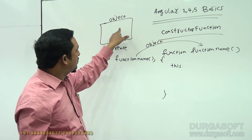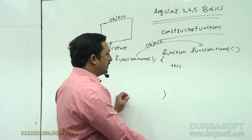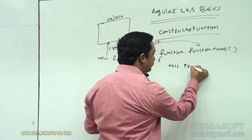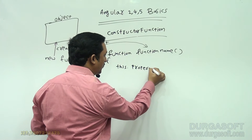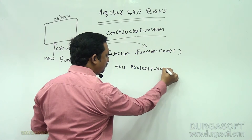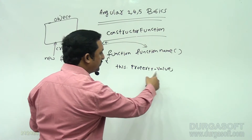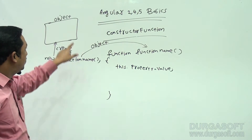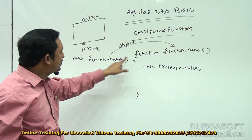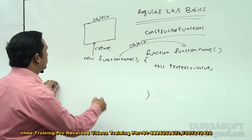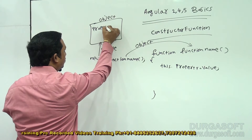So this means this particular object. If you write this.property, every property will have a value, and that property will be stored in this object because the this keyword refers to the object. So property equal to value will be stored there.